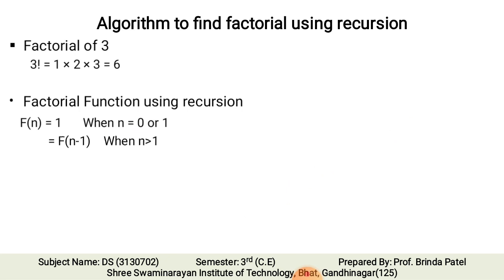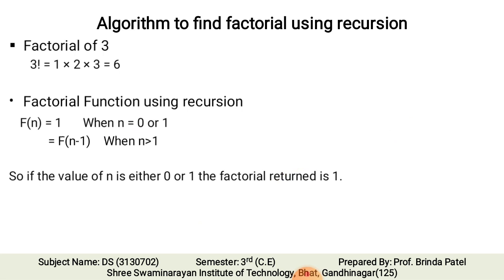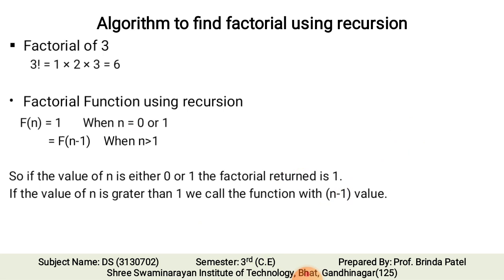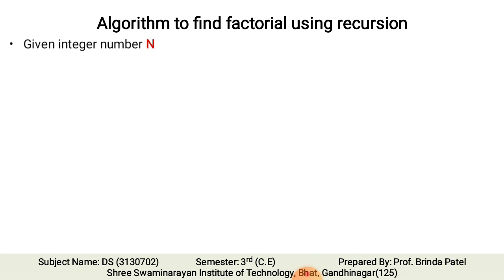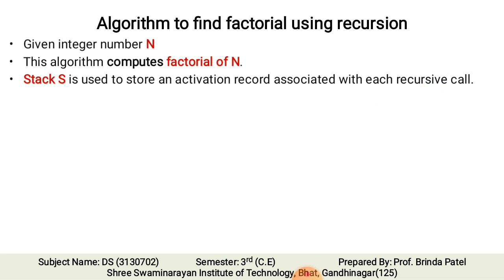When n is 0 or 1 the factorial returned is 1. When n is greater than 1, we call the function with n minus 1 value. The algorithm: given integer number n, the algorithm computes factorial of n. A stack S is used to store the activation record associated with each recursive call.